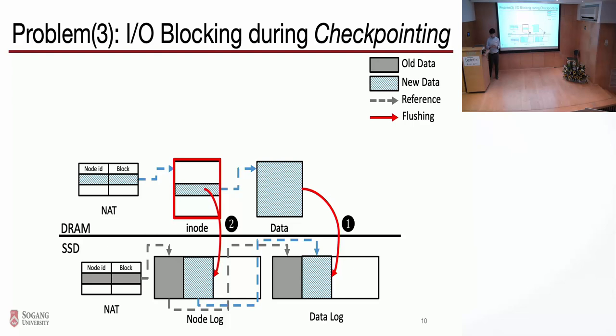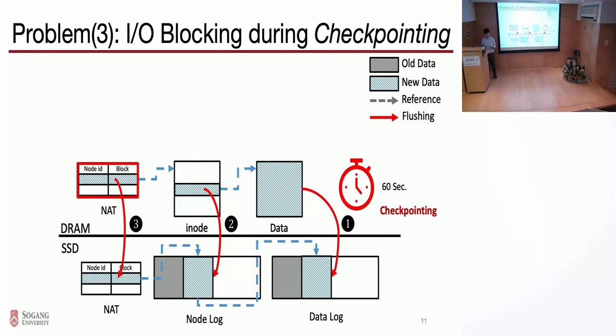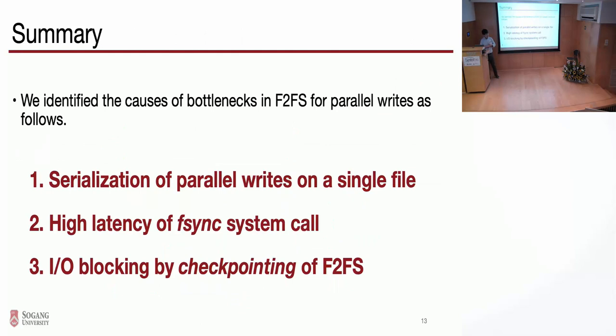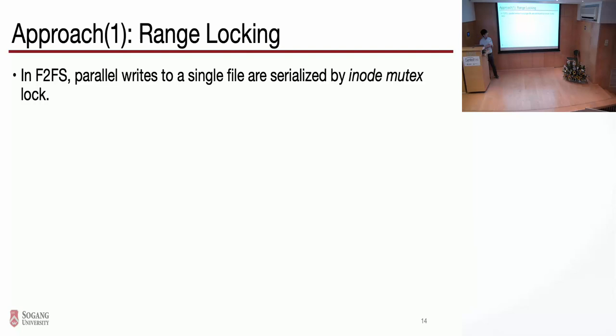We found that there is IO blocking time during checkpointing. Because we only store the modified NAT entry in memory, we have to flush the entire NAT table to the SSD at some point. F2FS triggers checkpointing every 60 seconds. When that checkpointing is triggered, it flushes the entire NAT table to the SSD. During checkpointing, F2FS blocks all incoming IOs to prevent modification of the file system metadata, including the NAT. We identified three performance bottlenecks in F2FS for parallel writes: first, serialization of parallel writes on a single file; second, high latency of the F-sync system call; and third, IO blocking time by checkpointing.